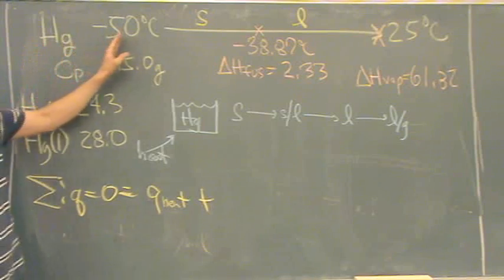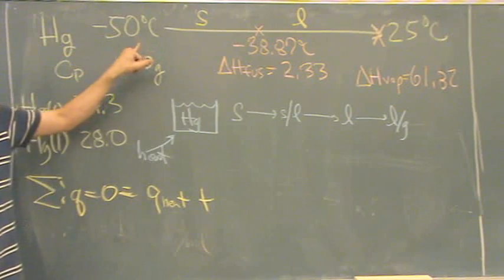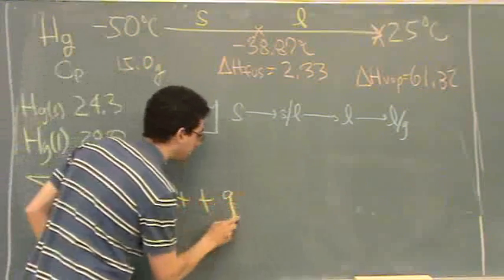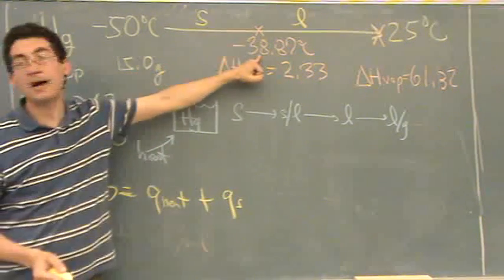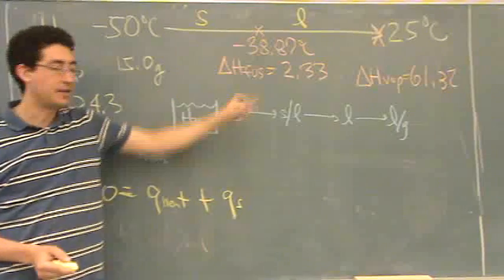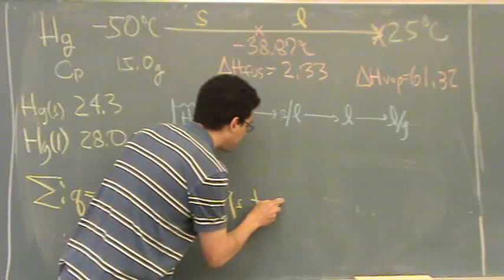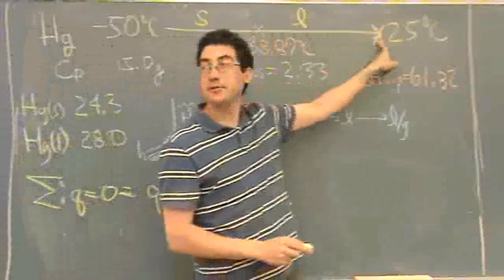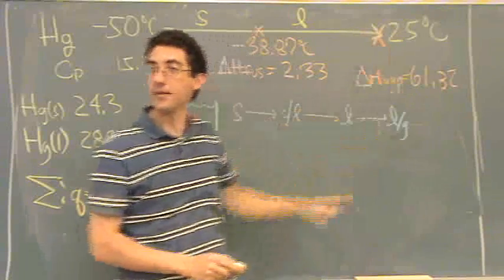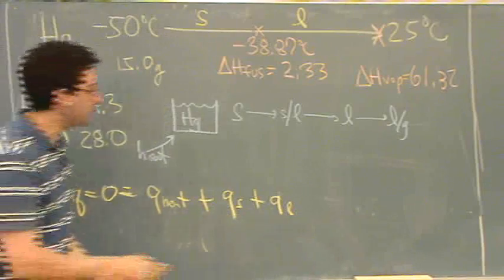So we have a q to warm up the solid. I'll put q solid. That's to warm up the solid up to here, up to the melting point. Then I have a q to warm up the liquid, from the melting point up to 25. That's to warm up the liquid.